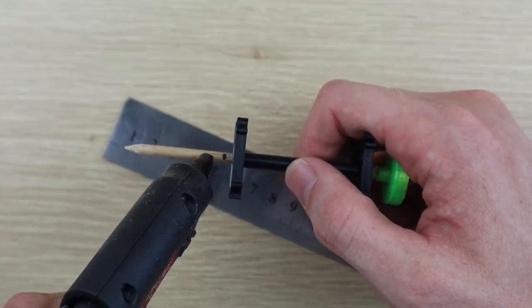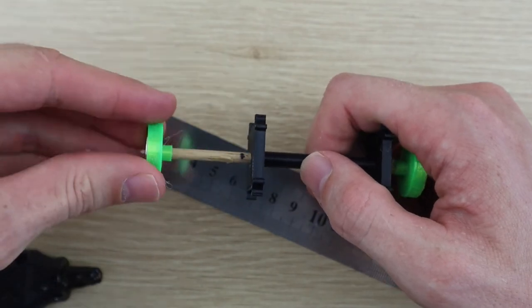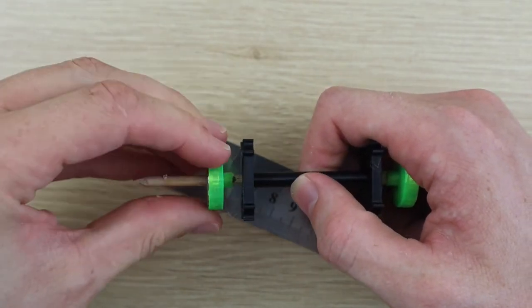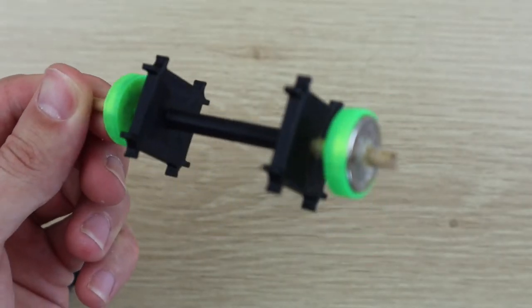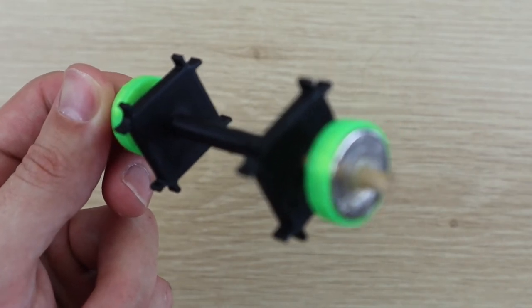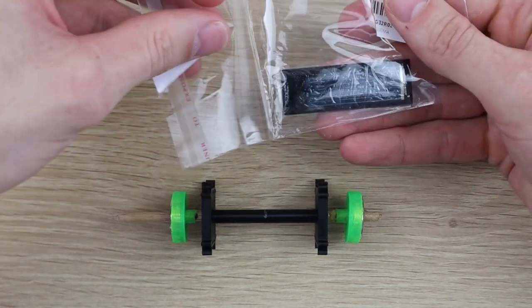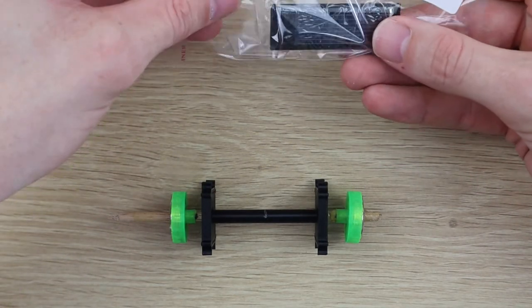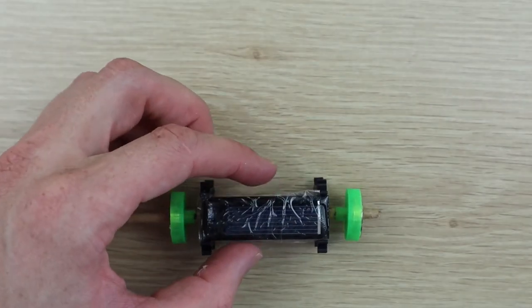Glue the second magnet holder onto the end to complete the rotor components. It's a good idea to test fit your solar panels at this stage and check the rotor on your base to see that the magnet polarities are correct before you start doing the windings.